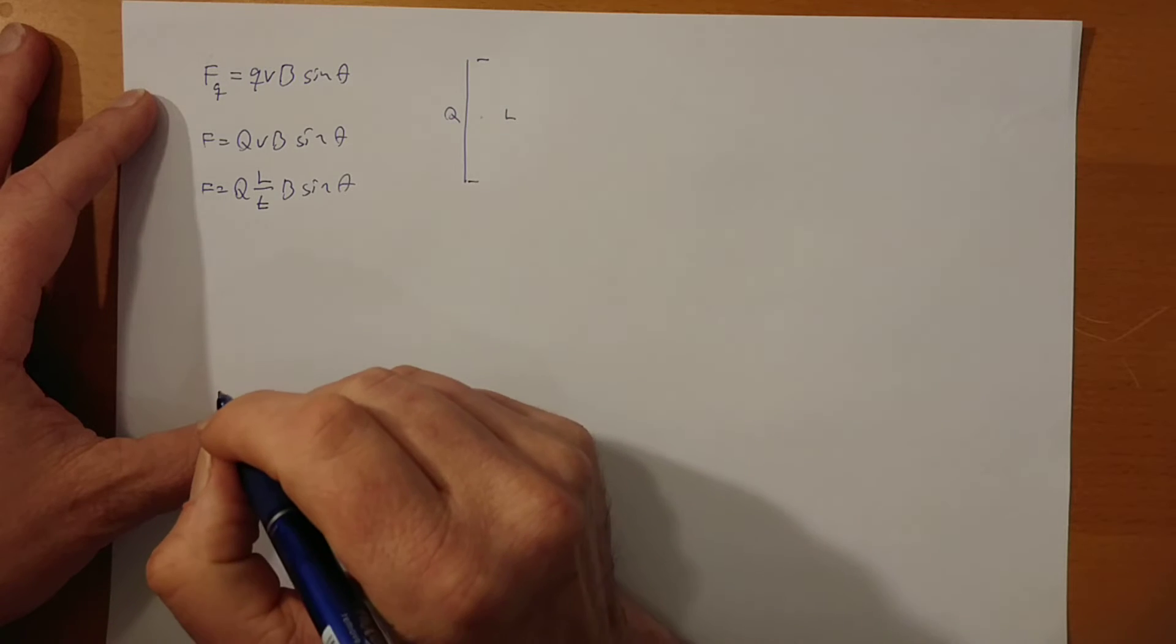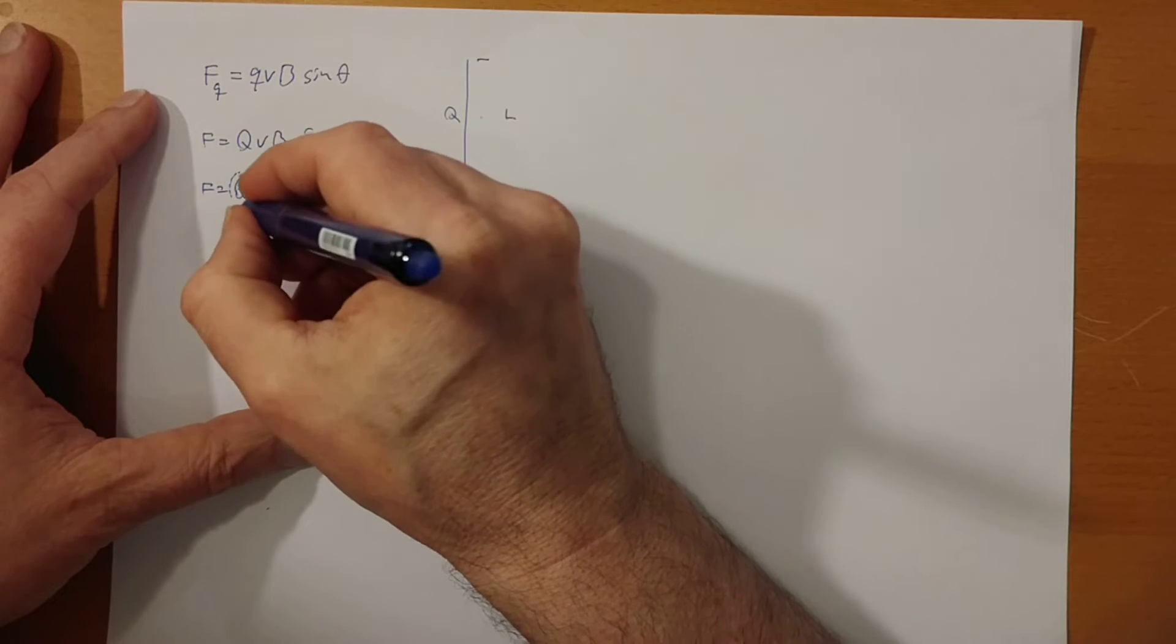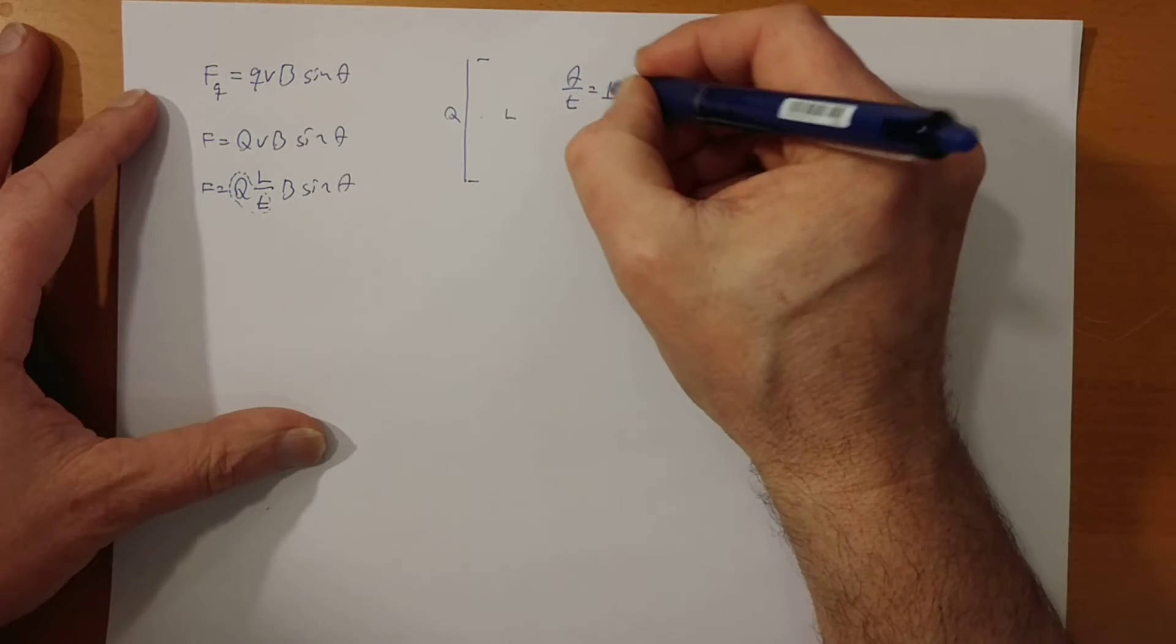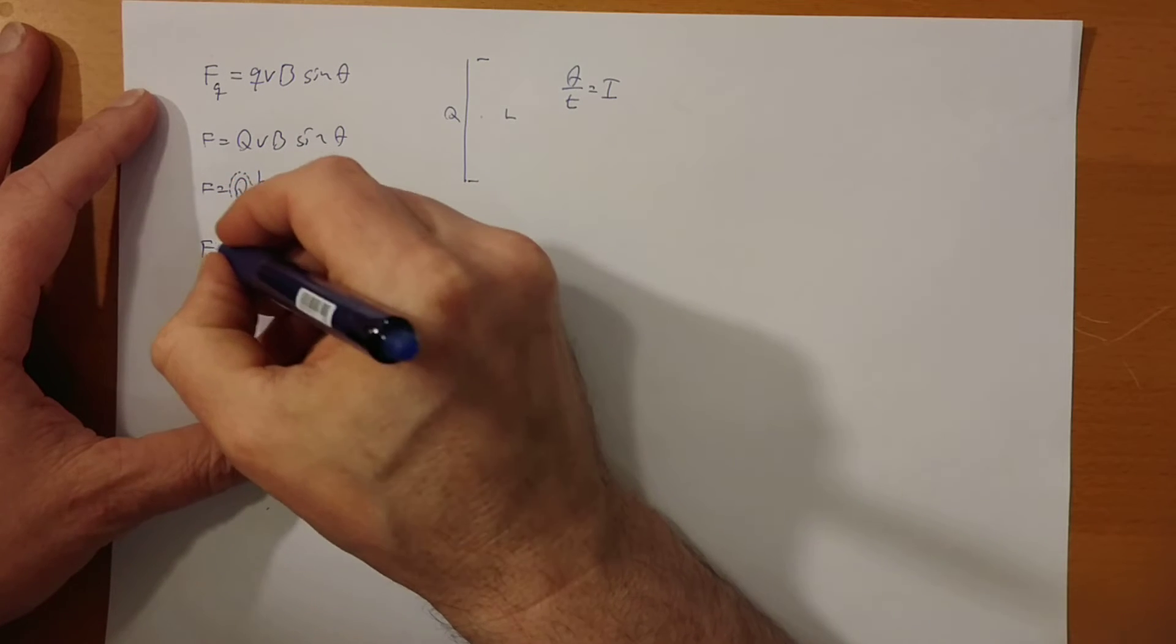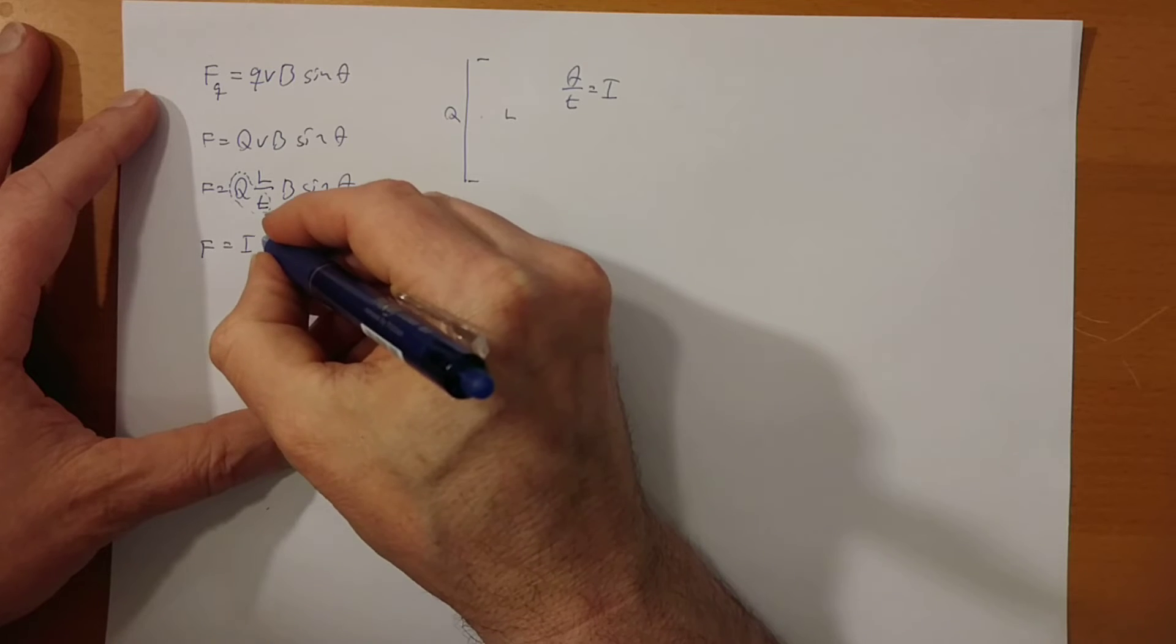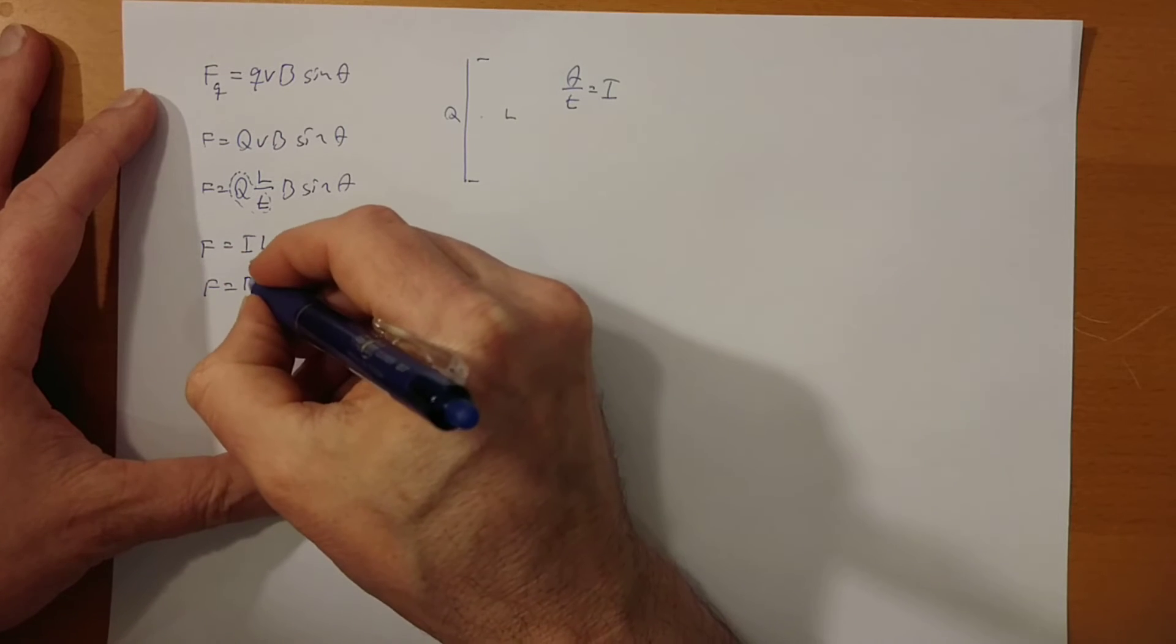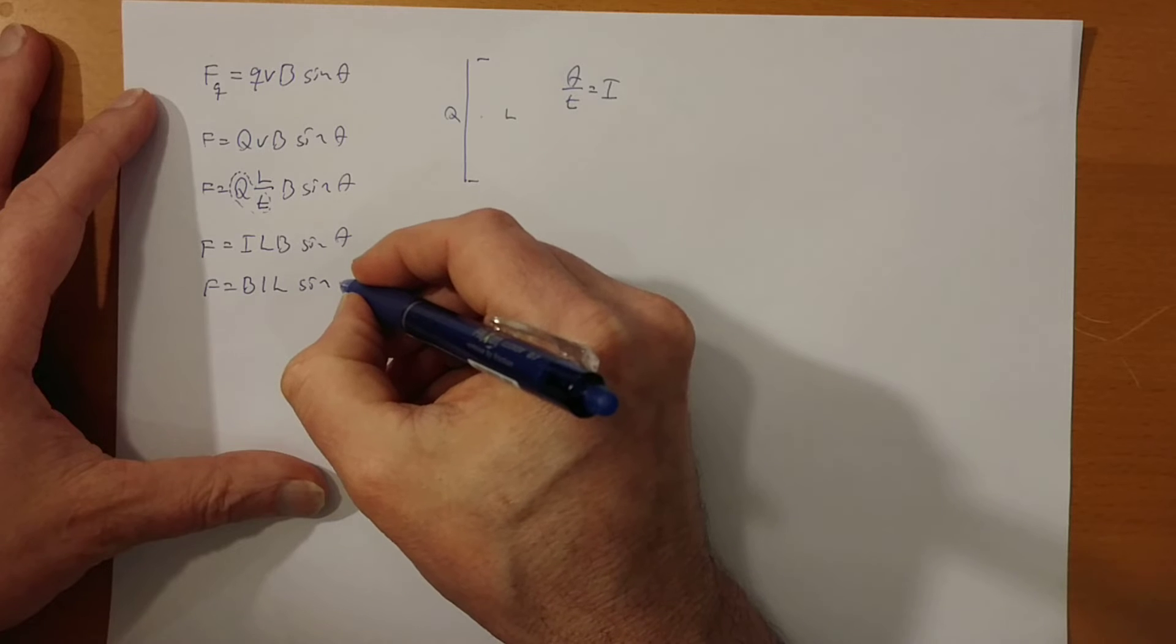Right? But wait a minute. This is charge over time, and we know, of course, that charge over time is the current. In other words, we can rewrite this formula as force equals the current times the length times B times sin theta, which usually is written as BIL sin theta.